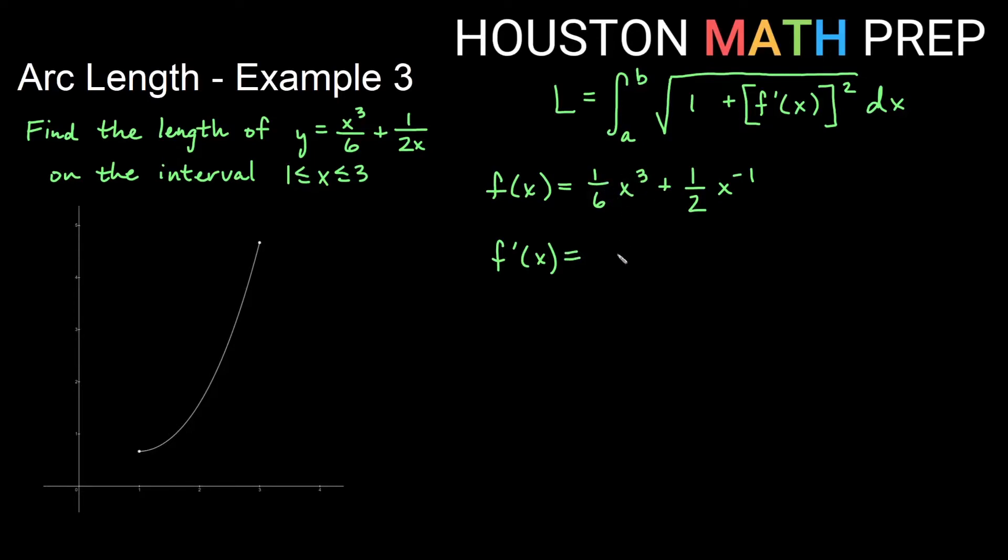So power rule, the three is going to come out, so that would be three-sixths, power will go down by one. So that would become x squared. Now here, the derivative negative one comes out. So I get minus one half. And then the power goes down by one here. So I would say x to the minus two. We have that. I'm going to go ahead and change this to one half. So this will be a one half x squared minus one half x to the negative two. That's our f prime.